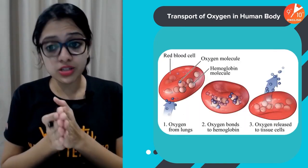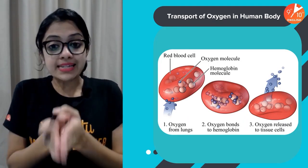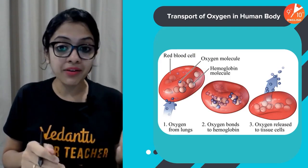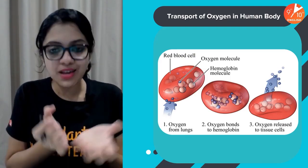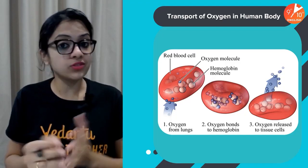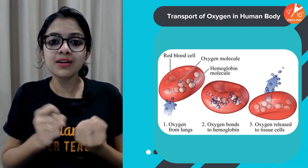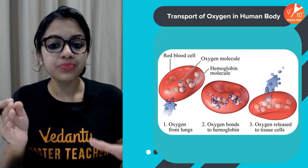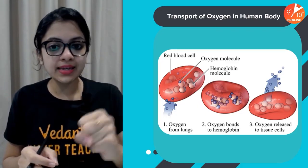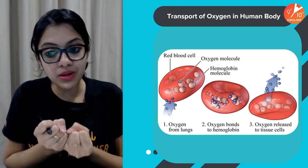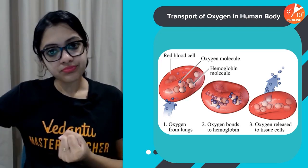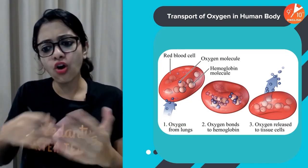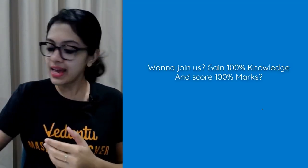Oxygen transport in the human body is carried out by red blood cells. Hemoglobin, acting like a cab driver, picks up the passengers — oxygen and carbon dioxide. Oxygen from the lungs is picked up by hemoglobin in the red blood cells, bonds to hemoglobin, and once the blood reaches target cells in the body, oxygen gets released into the tissue cells.